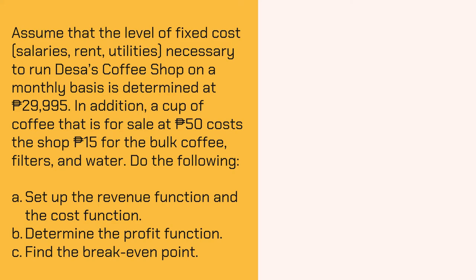Let's start with the revenue function. Take note that the revenue function is written as R of X, and that is the price times the number X, which is the number of units sold. In this problem, the price of the coffee costs P50. Therefore, the revenue function is R of X equals 50X.